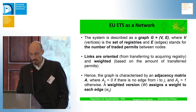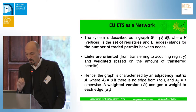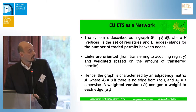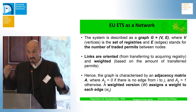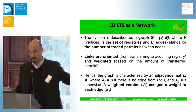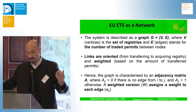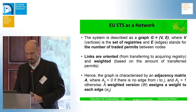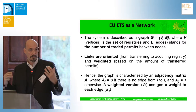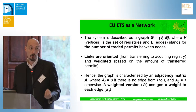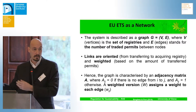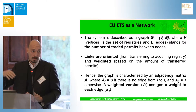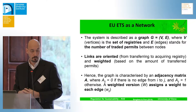To do that, I will describe the system as a graph, with vertices V represented by the set of registries, and edges E that stand for the number of traded permits. These links, these edges, are oriented from transferring to acquiring registry, and are weighted according to the number of permits being transferred. So what we have is the so-called adjacency matrix, whose entries are either 0 or 1 — 0 if two nodes are not connected, and 1 if they are — and when they are, the link is weighted according to the number of permits being exchanged between the two nodes.